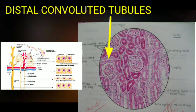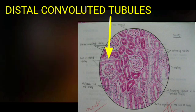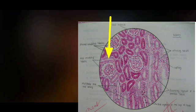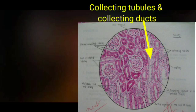The distal convoluted tubule (DCT) has a diameter of about 20 to 30 micrometers and is lined by simple cuboidal cells, but these are different from those of the proximal convoluted tubule. The cytoplasm is lightly stained with eosin, and brush-border appearance is not seen because there are no microvilli. The cells are comparatively shorter than those of the PCT, which is why the lumen is larger. The collecting tubules and collecting ducts show simple cuboidal cells with no brush-border appearance, and the cells are deeply stained.